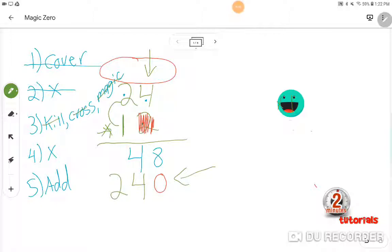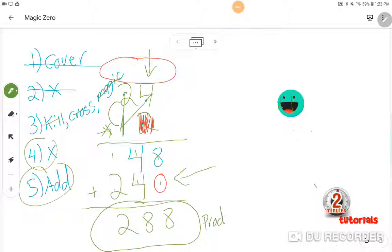We multiplied 1 times 4 and then 1 times 2. And now we're going to add the two rows. We get 8 plus 0 is 8, 4 plus 4 is 8, and 2 plus 0 is 2. So what is 24 times 12? The product or the answer is 288. Remember that the answer to a multiplication problem is the product.